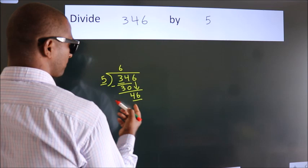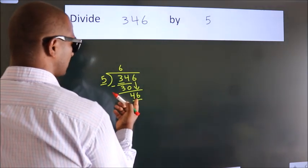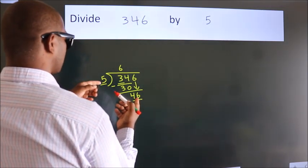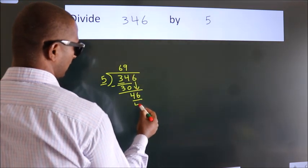So 46. A number close to 46 in the 5 table is 5 times 9 equals 45.